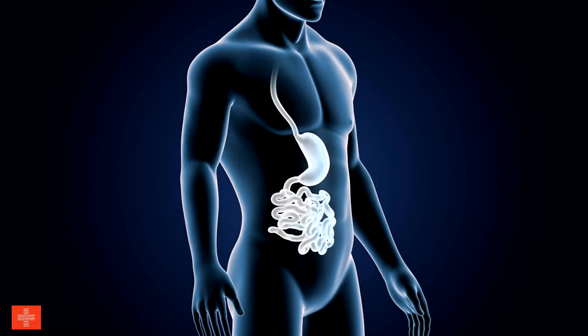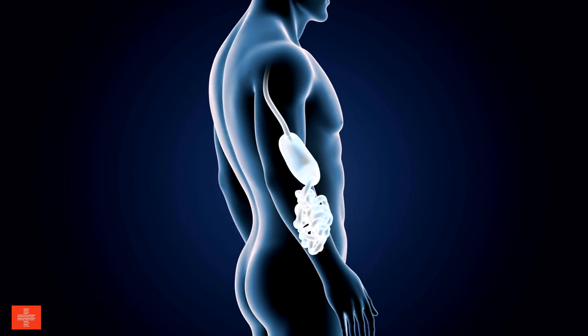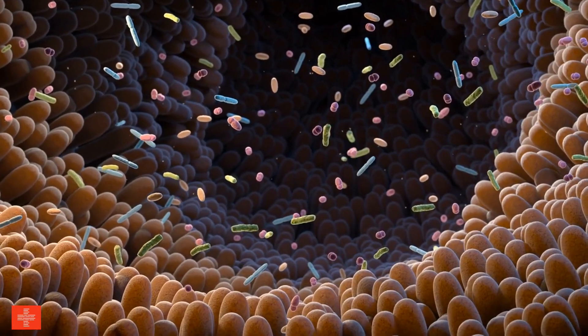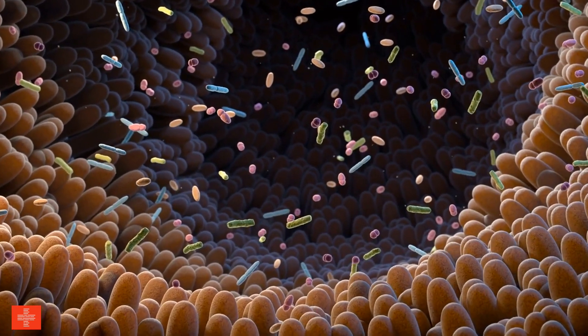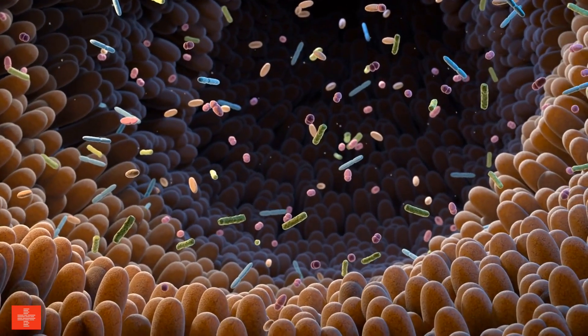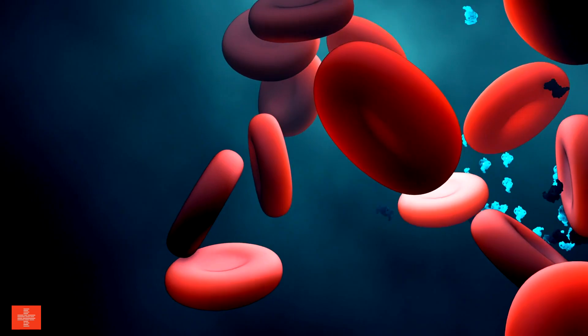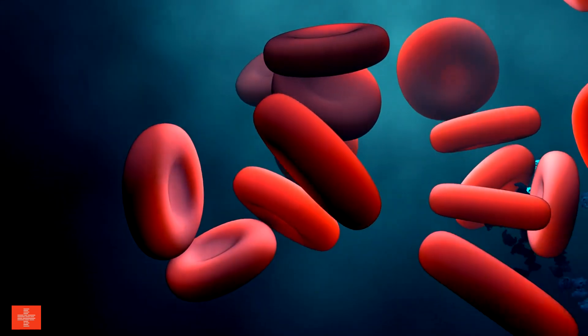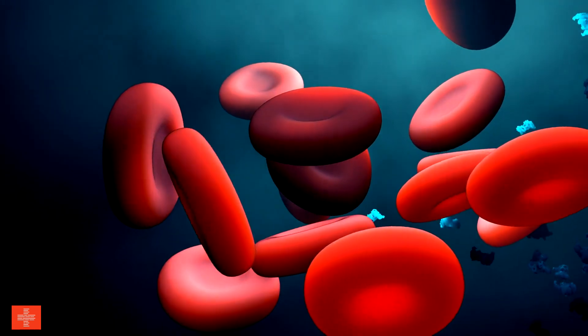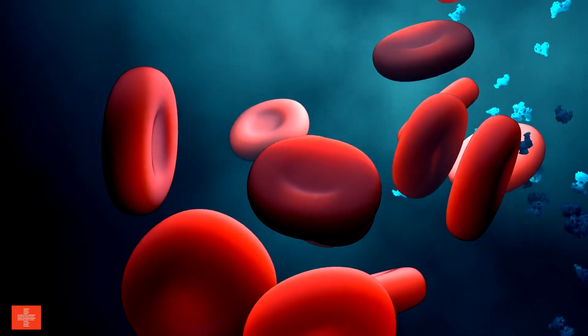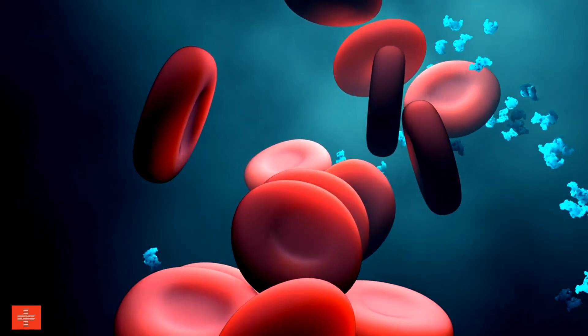After leaving the stomach, food travels into the small intestine. The small intestine is the longest part of the digestive tract, and it is where most of the digestion and absorption of nutrients takes place. The small intestine contains enzymes that break down carbohydrates, proteins, and fats into even smaller molecules that can be absorbed into the bloodstream.